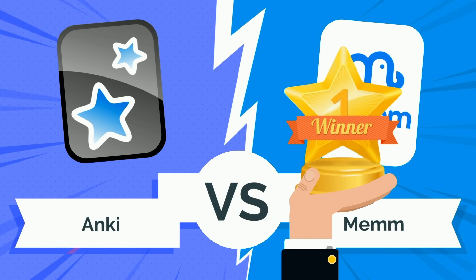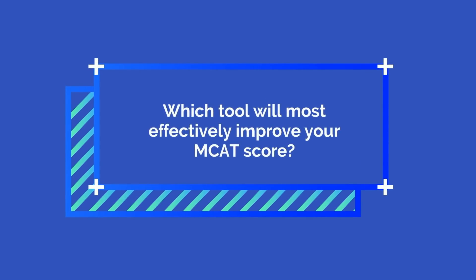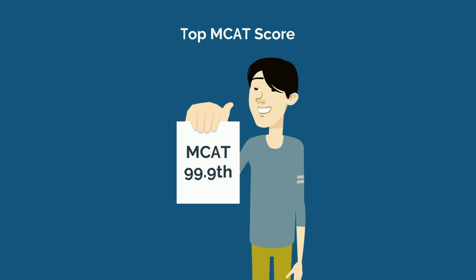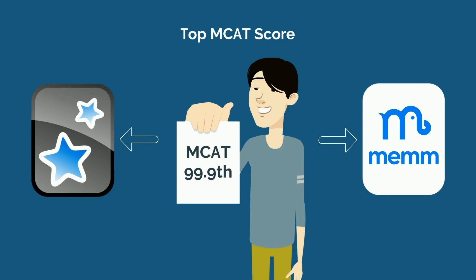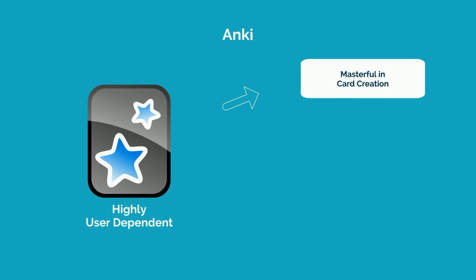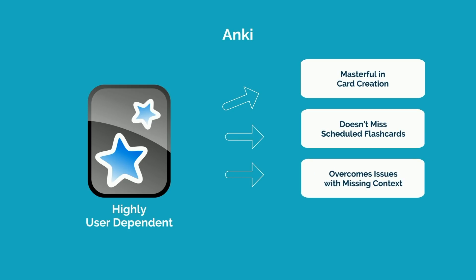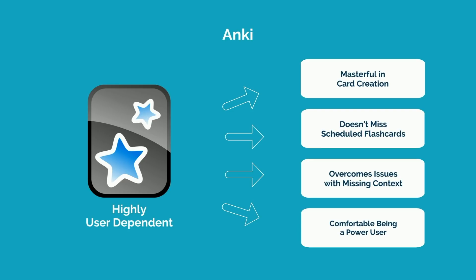At the end of the day, the aforementioned factors pale in comparison and fade away when we ask the most important question: which tool will most effectively improve your MCAT score? The answer to this question is, unfortunately, far from clear cut. You can attain a top MCAT score in record time using either tool, but the question is which one will more reliably and predictably produce high quality results. Anki is a powerful tool that is highly user dependent. If a student is masterful in card creation — which is no easy task — is impeccable in not missing any scheduled flashcards, is somehow able to overcome the issues with missing context, and is a power user who is comfortable constantly tweaking settings, plugins, and options, then they may be able to achieve a stellar MCAT score.